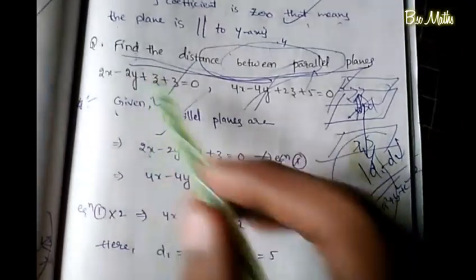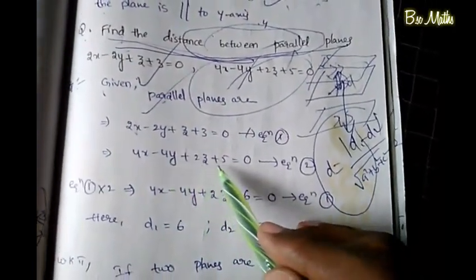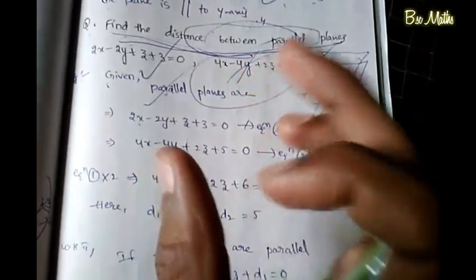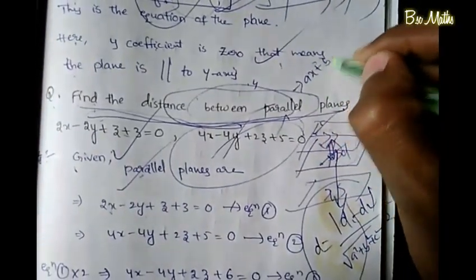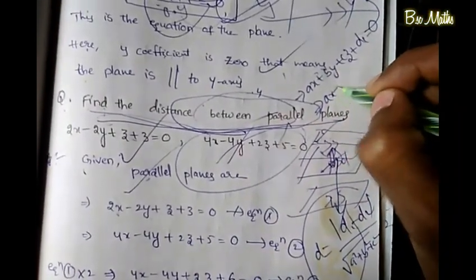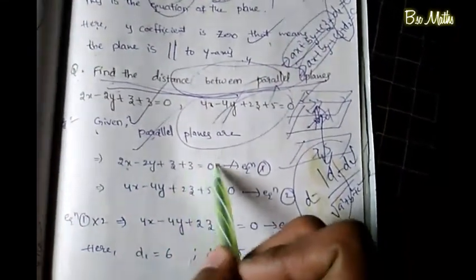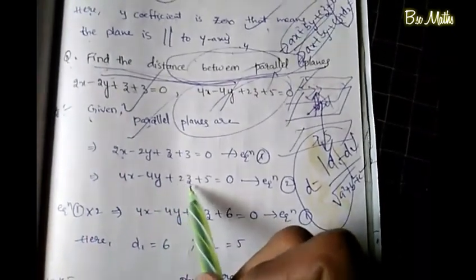The formula for distance between parallel planes is d = |d1 - d2| divided by the square root of (a² + b² + c²). Given the two planes: 2x - 2y + z + 3 = 0, and 4x - 4y + 2z + 5 = 0. To apply the formula, the coefficients must match. We multiply the first plane by 2: 4x - 4y + 2z + 6 = 0.